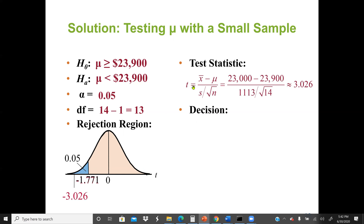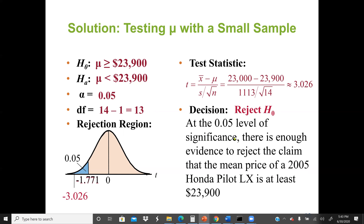Next, we find the t-statistic. T equals X-bar ($23,000) minus population mean ($23,900), over the sample standard deviation ($1,130) divided by the square root of the sample size (14). This gives us negative 3.026. We then find the p-value from the table. Since the p-value is less than or equal to alpha 0.05, we reject H0. At the 0.05 level of significance, there is enough evidence to reject the claim that the mean price of the Pilot LX is at least $23,900.